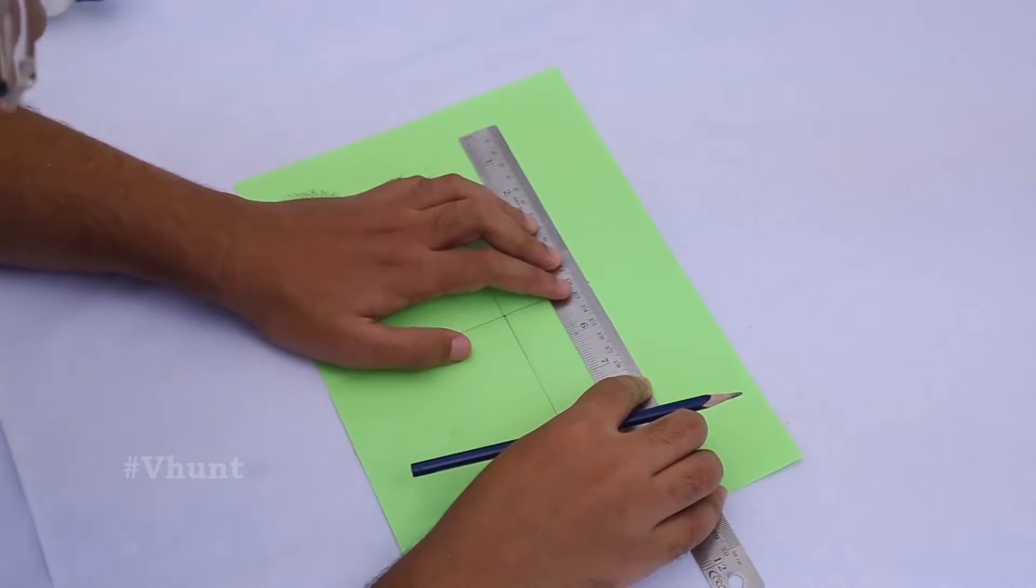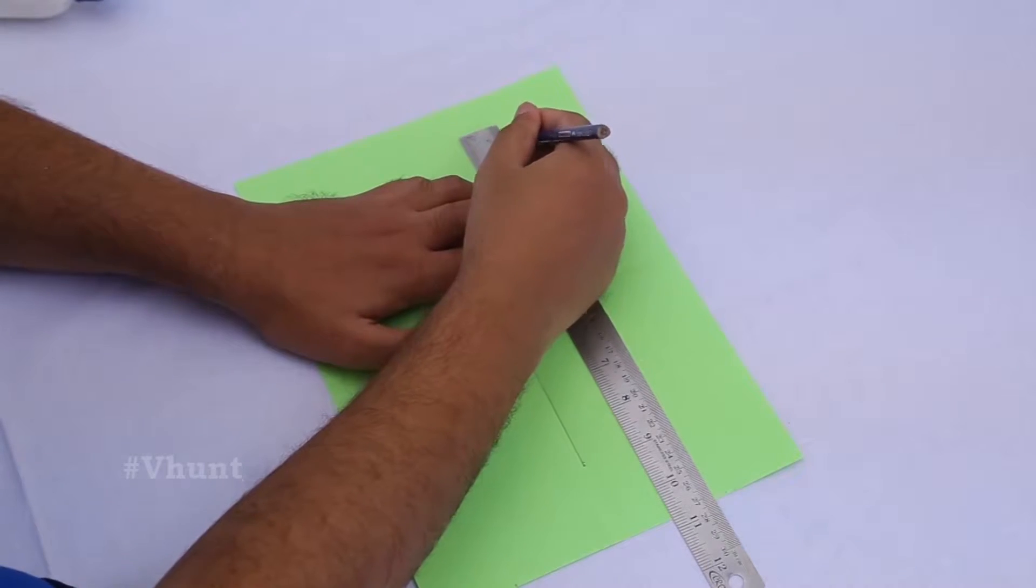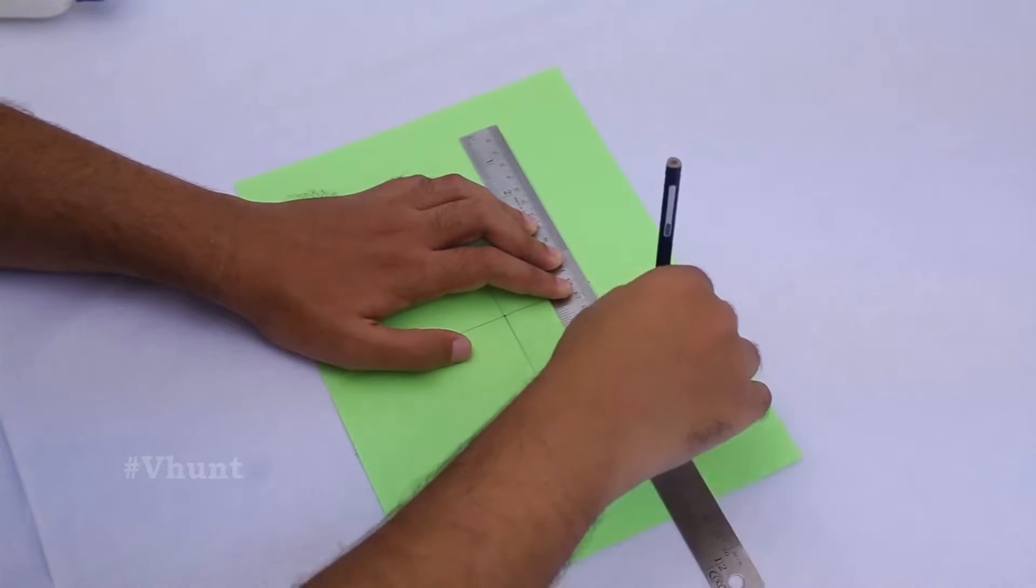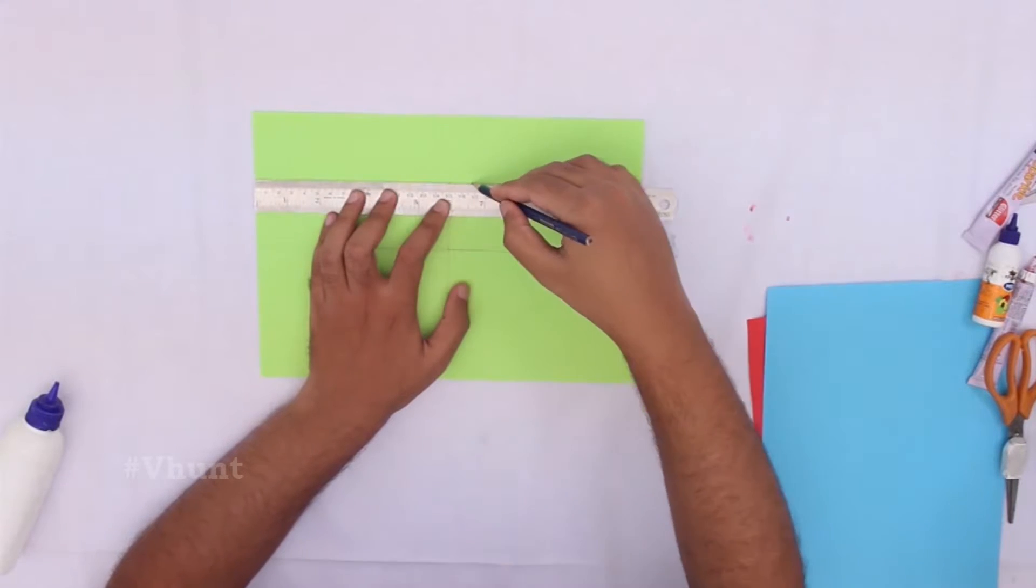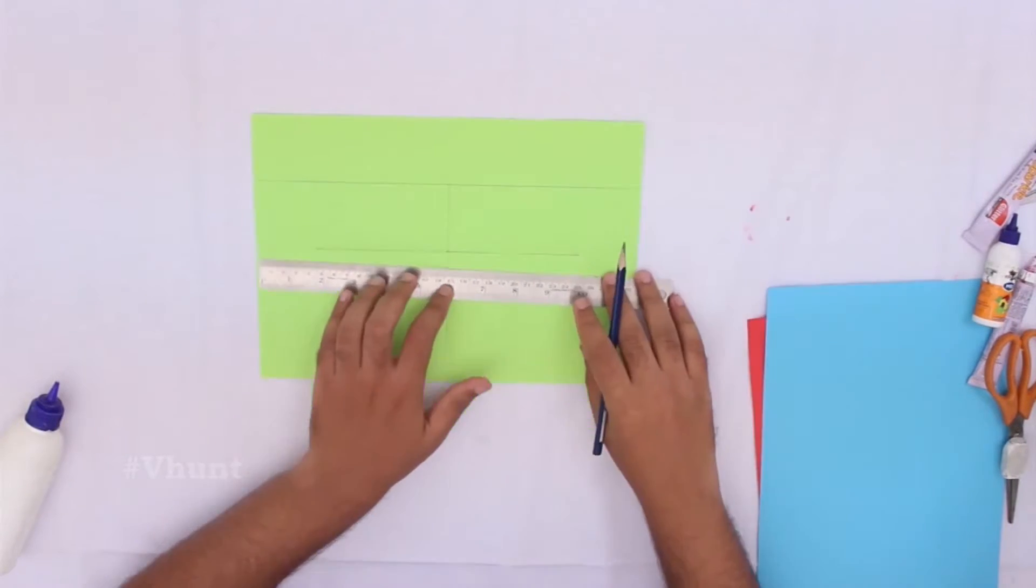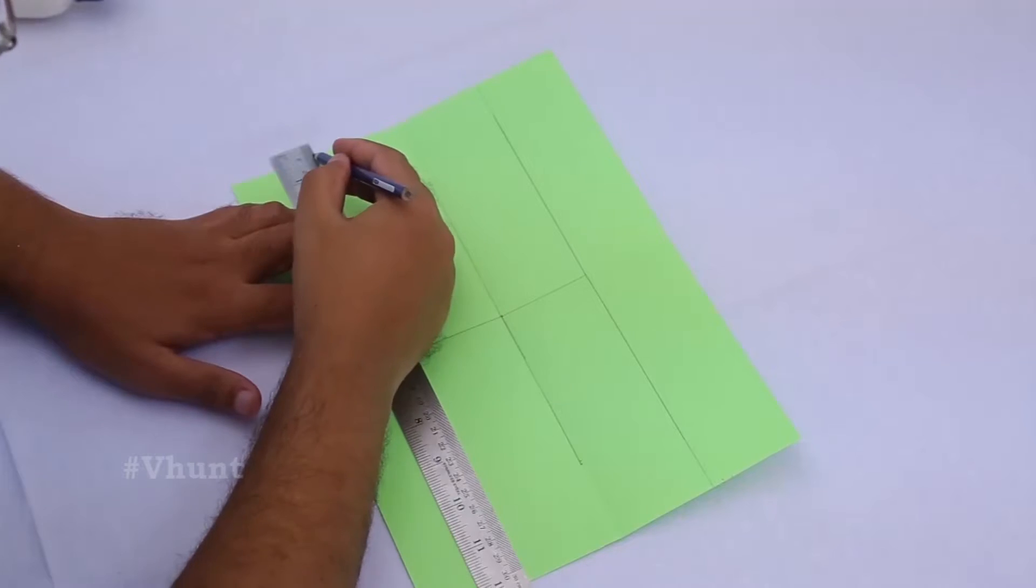From the top point of 5.2 cm, draw an accurate horizontal line. Continue the same from the bottom 5.2 cm point.